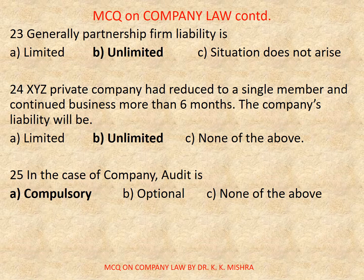Question number 24: XYZ private company had reduced to a single member and continued business for more than 6 months. The company's liability will be? Options are: A) Limited, B) Unlimited, C) None of the above. Correct option is B, Unlimited.